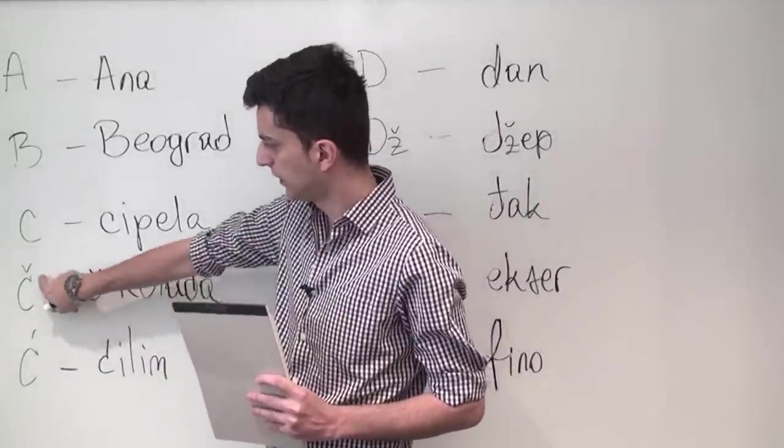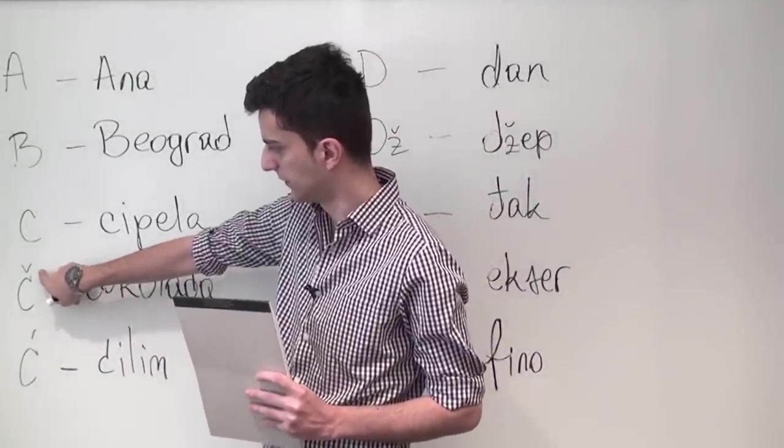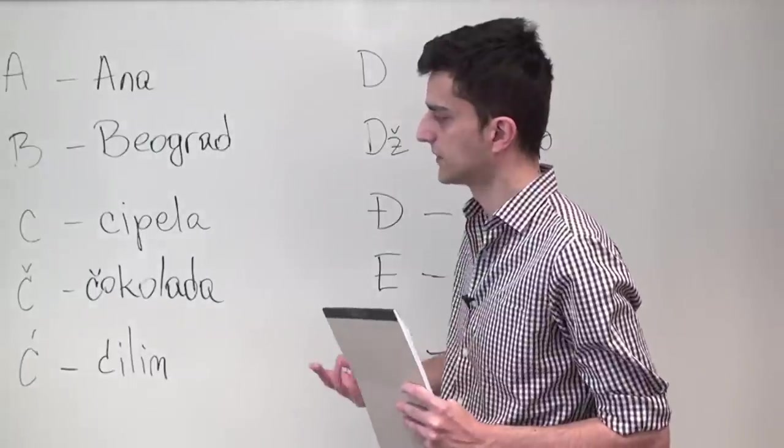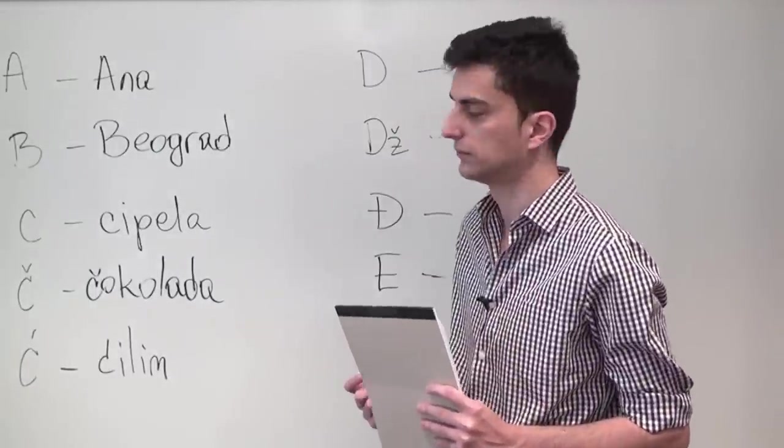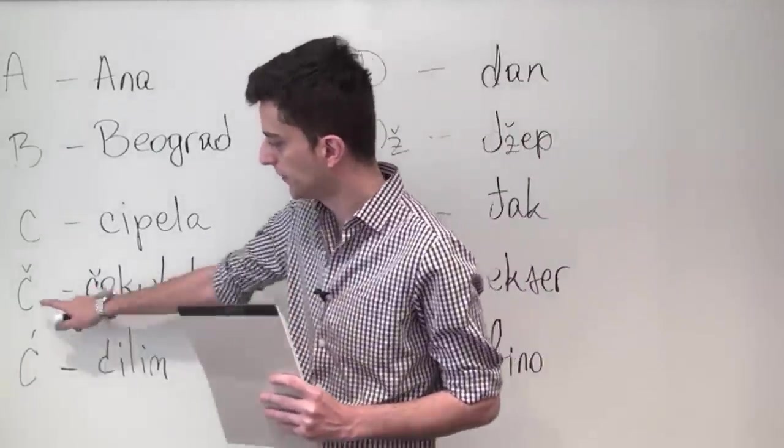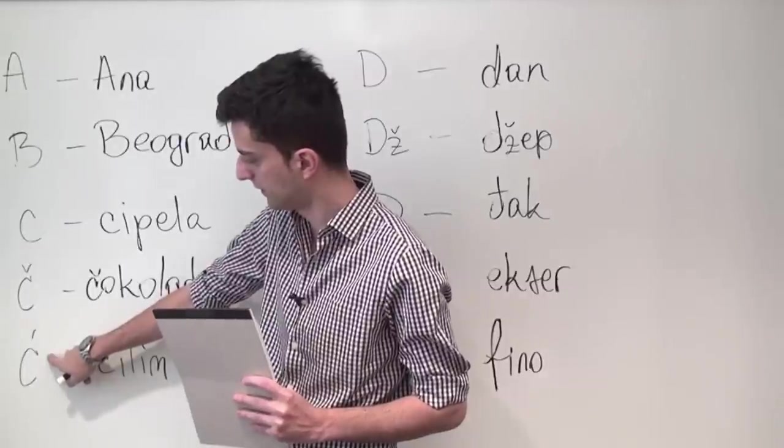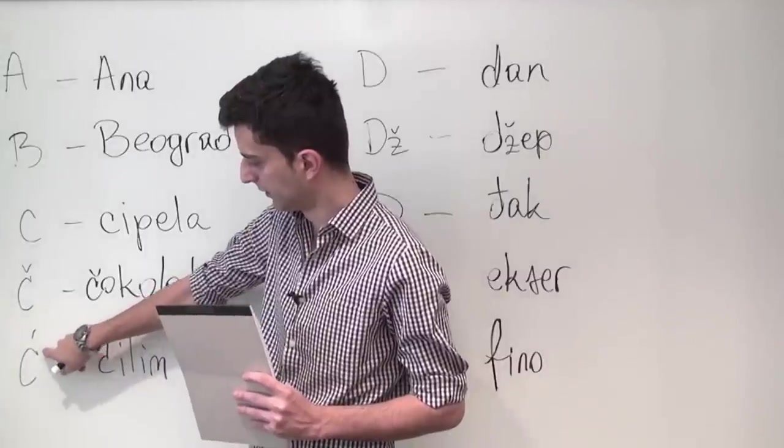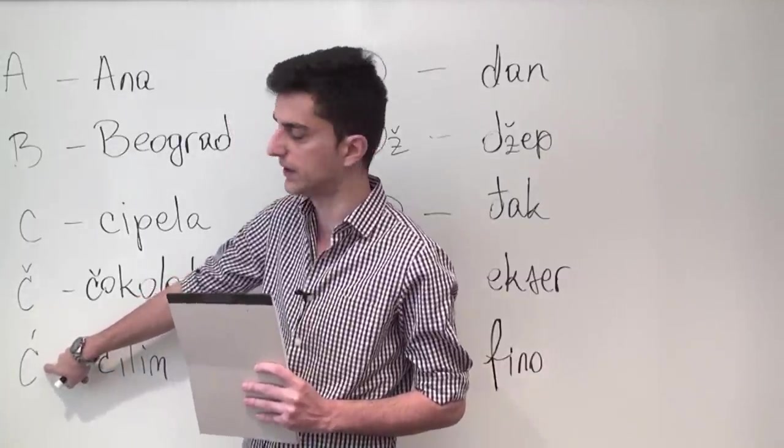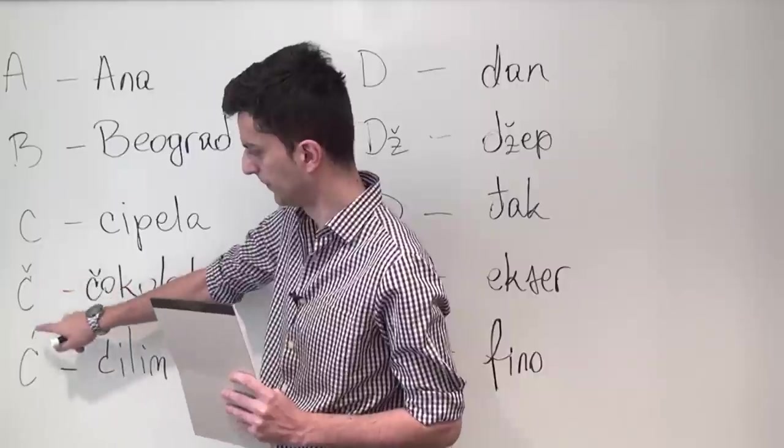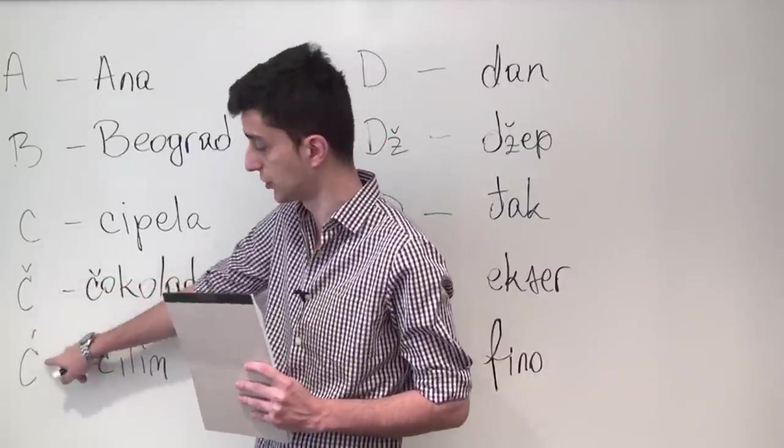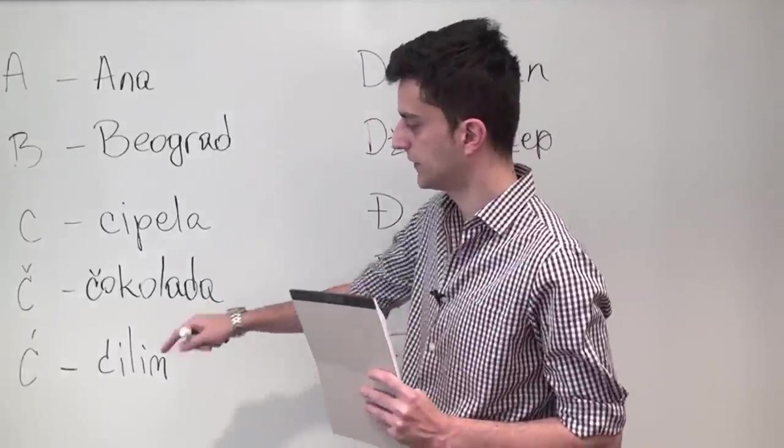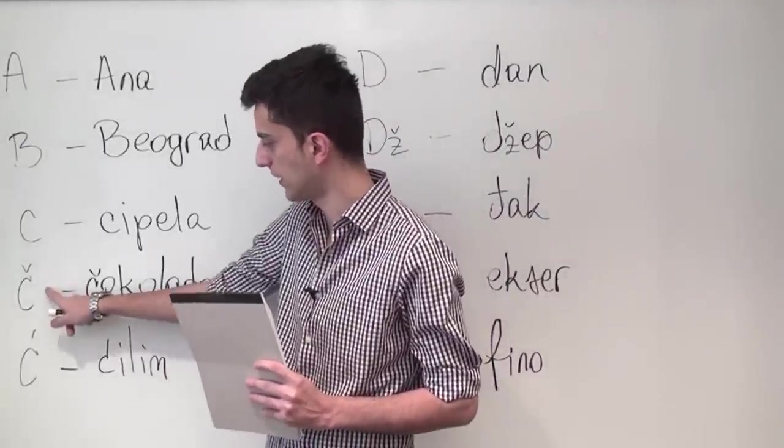Now Č with a caron is specific to BCS and it's pronounced Č. It has a pair, so this C with a little hat or a little line is its pair, and one of them is harder. So Č is harder and Ć is a bit softer. You should pay attention to these two and try to differentiate the two sounds.